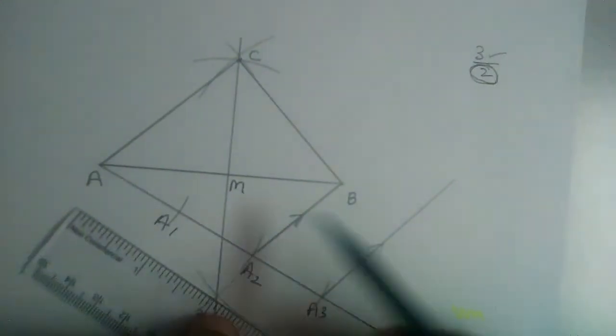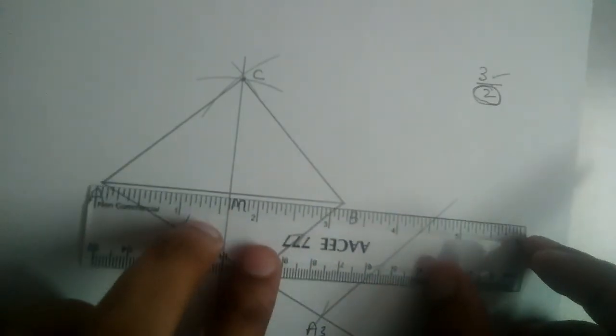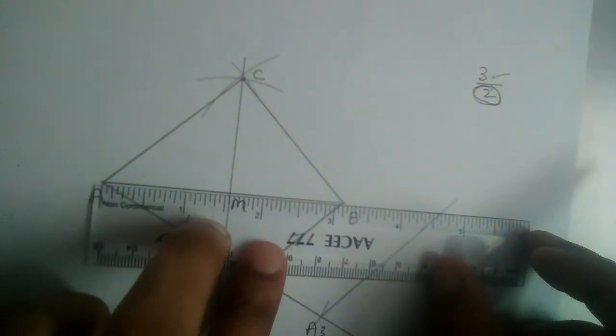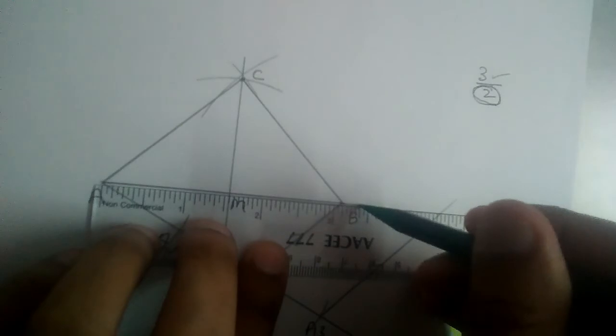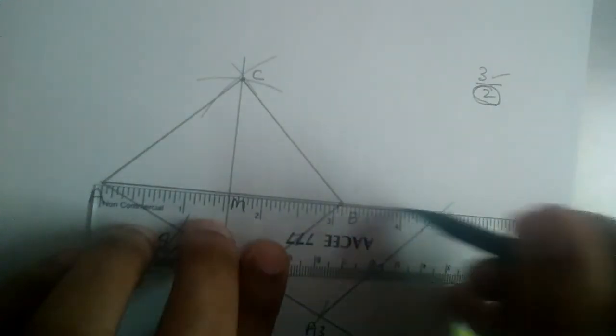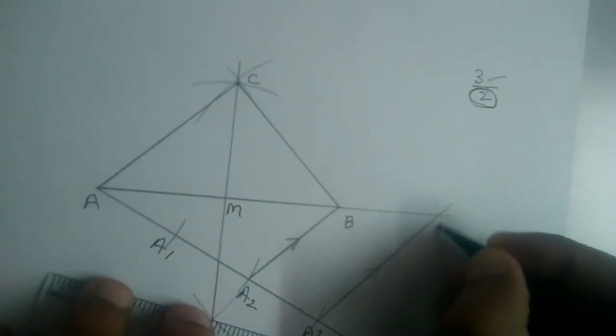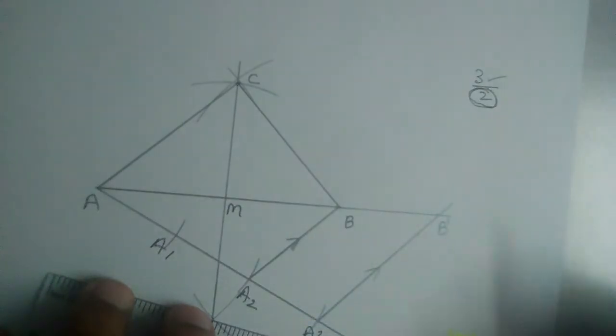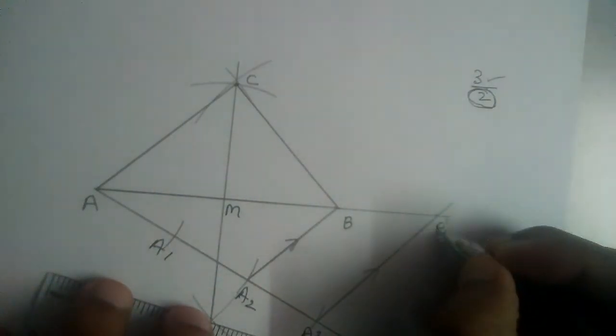Of course this line will not intersect AB because the triangle which we are going to draw is a bigger triangle. So let us extend this line AB. And the point of intersection B dash. So this is B dash.